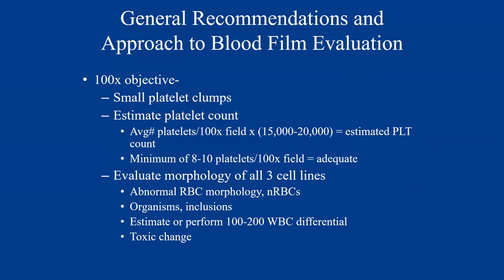At 100x, look for small platelet counts and estimate your platelet count — your average number of platelets in 10 100x fields multiplied by 15,000 to 20,000. You'd want to see a minimum of 8 to 10 platelets per 100x field to feel that it's adequate, and you need to look at multiple fields across the slide. At 100x, we also evaluate morphology of all our cell lines: abnormal red cell morphology, nucleated reds, organisms and inclusions. This is where you perform your 100 to 200 white blood cell differential, breaking out neutrophils, bands, monocytes, eosinophils, and looking for morphologic changes like toxic change.